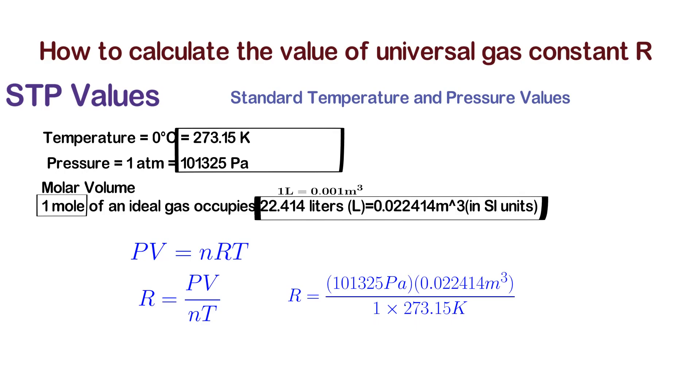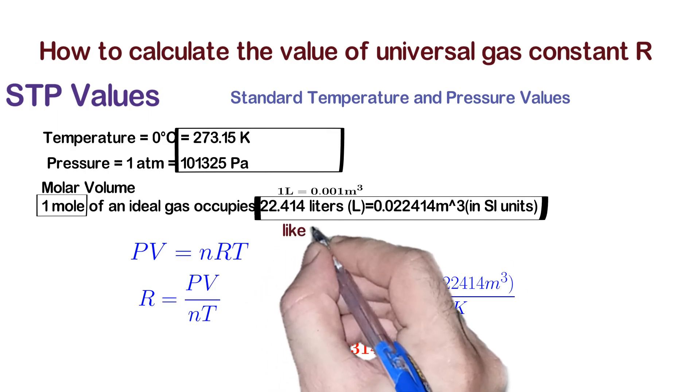We get the value of universal gas constant R = 8.314 joules per mole kelvin. That's it. Thank you for watching and don't forget to subscribe to our YouTube channel for more videos.